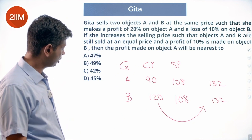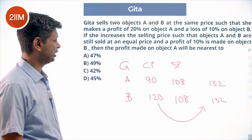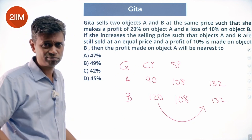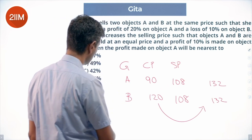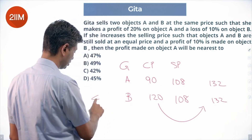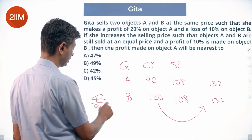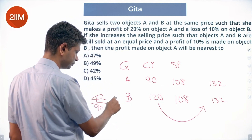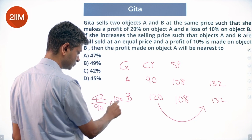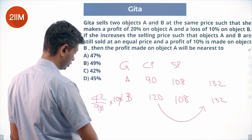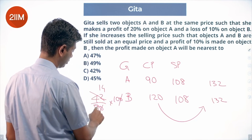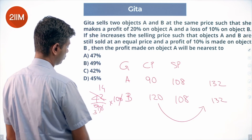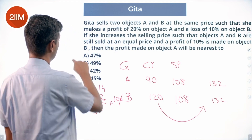Then the profit made on object A will be nearest to: she's making 42 profit on a cost of 90. So 42 divided by 90 into 100 equals 42 times 10 by 9, which is 14 by 3 times 100, giving approximately 46.7%, nearest to 47%. The answer is approximately 40.